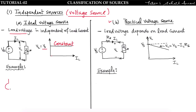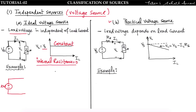For example, consider a 10-volt ideal voltage source. An ideal voltage source has internal resistance equal to zero. Let us take this 10-volt ideal source connected with a load having resistance R, where the load voltage is VL and the current flowing through the circuit is IL.